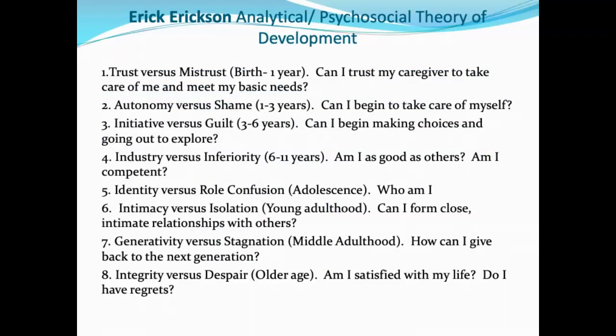An alternative to Freudian theory is Erikson's theory. Erikson was a follower of Freud but revised his theory significantly. Erikson's theory had eight stages to Freud's five. He focused on interpersonal interactions — parent-child and social relationships — rather than psychosexual stages. He also split adulthood into three distinct stages rather than one long one. Unlike Freud, Erikson didn't believe strongly in the unconscious, and he didn't say you could get stuck in a stage. Instead, each stage contained a conflict, and how you negotiated that conflict stayed with you for the rest of your life.